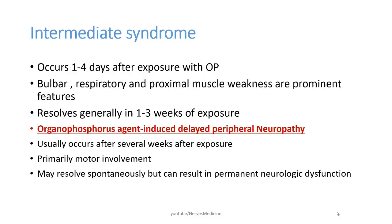Intermediate syndrome occurs one to four days after exposure with organophosphates. Bulbar, respiratory, and proximal muscle weakness are prominent features. Intermediate syndrome generally resolves in one to three weeks. Organophosphorus agent-induced delayed peripheral neuropathy usually occurs after several weeks of exposure. Primarily motor involvement — it may resolve spontaneously but can result in permanent severity of paralysis.